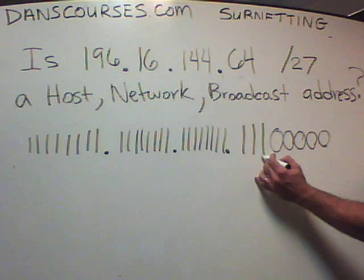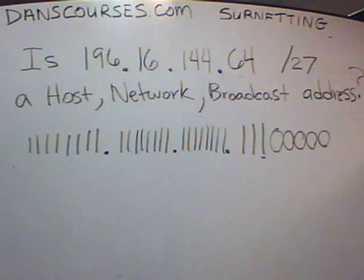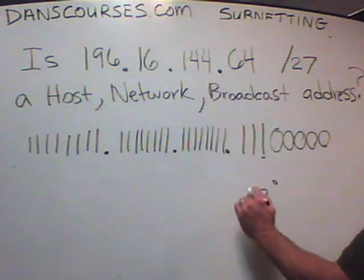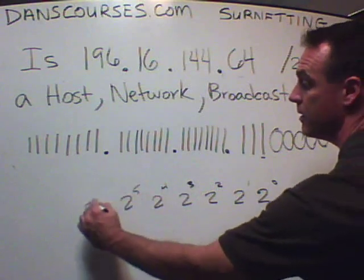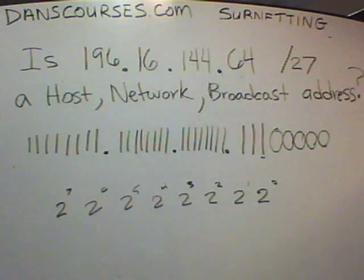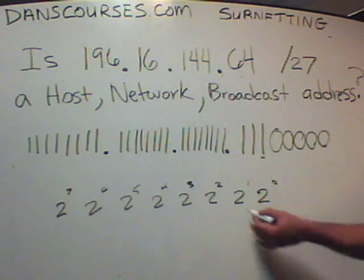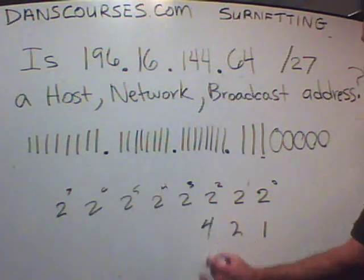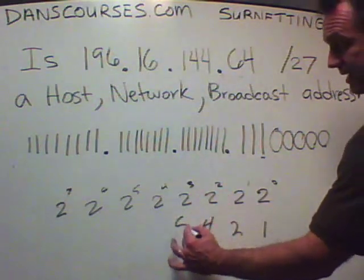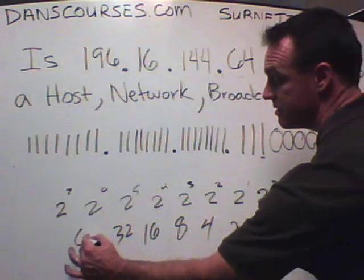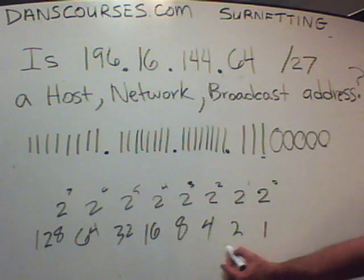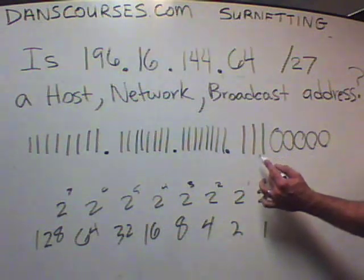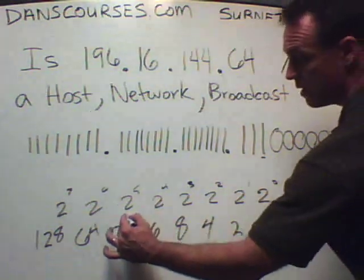All you need to know is what is the last one-bit's place value in the binary number scheme. In binary you have eight bits: two to the zero, two to the one, two to the two, two to the third, two to the fourth, two to the fifth, two to the sixth, and two to the seventh power. That gives you place values of 1, 2, 4, 8, 16, 32, 64, and 128. So that last one-bit — the 27th bit, the third one over from the left in the last octet — is in the 32's place.